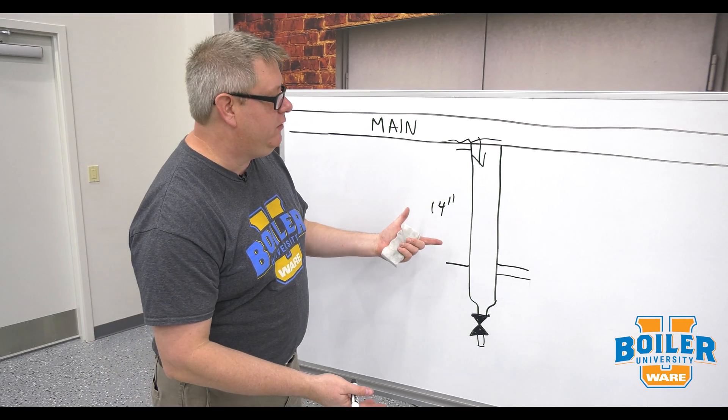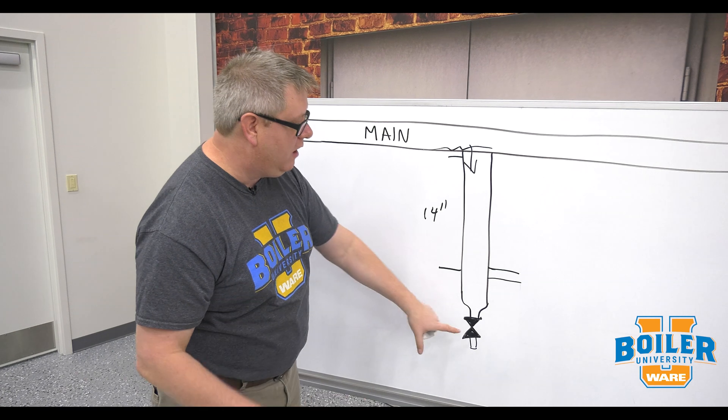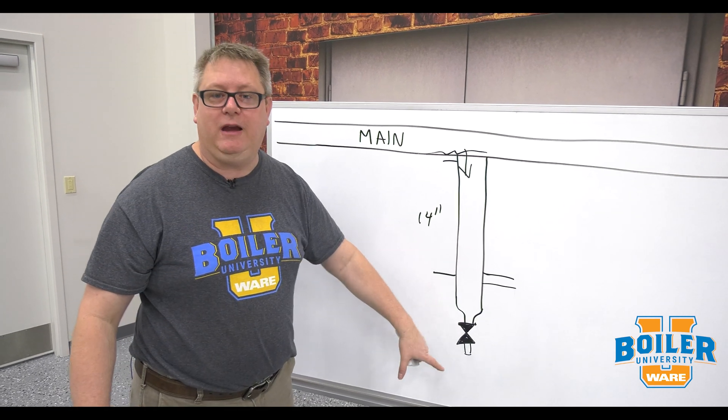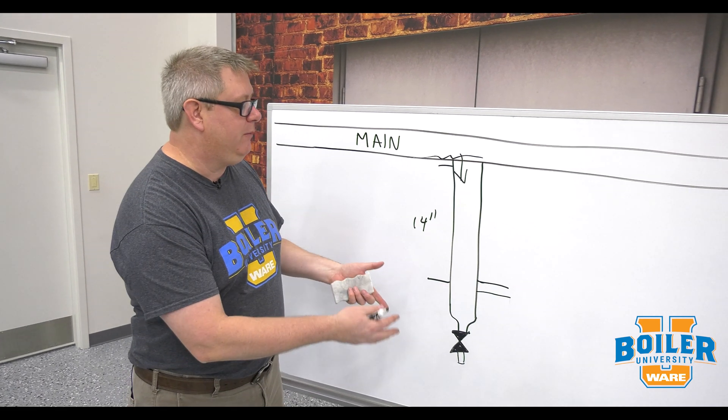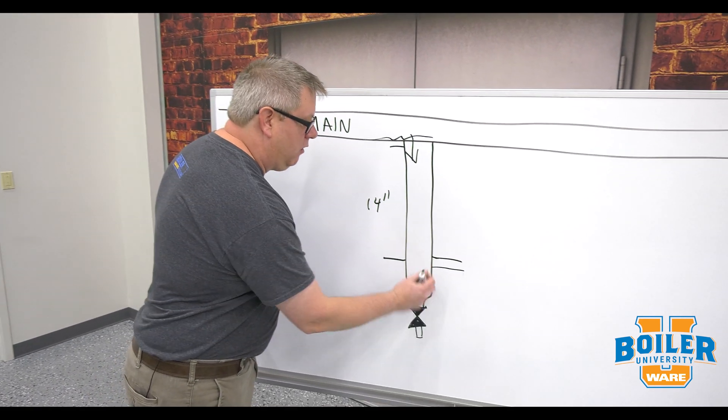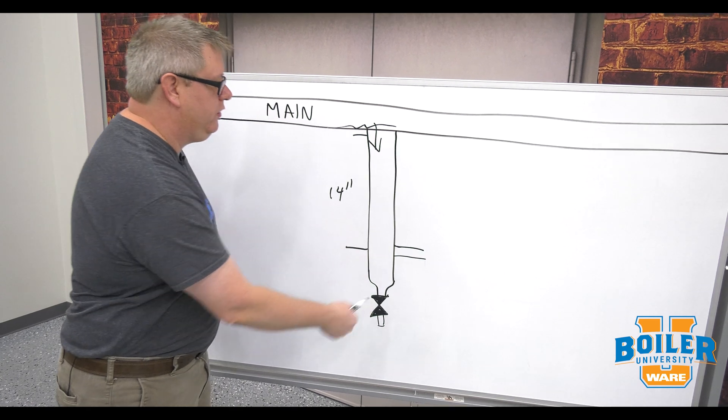A manual start up on a system means when I shut the system down I may go around and open these drain valves to remove, allow condensate to drain from the system and as the system comes back up I will, when steam starts coming out, close those.